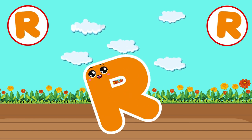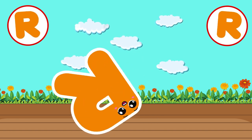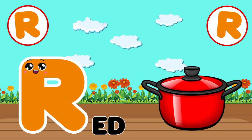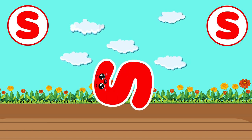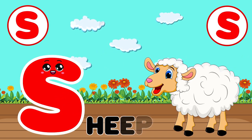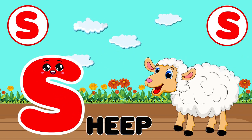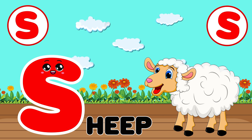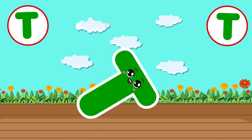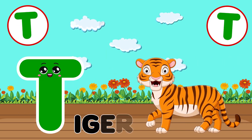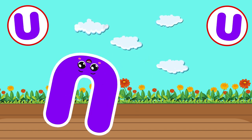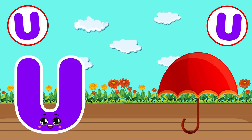R. R for Rat. S. S for Sheep. T. T for Tiger. U. U for Umbrella.